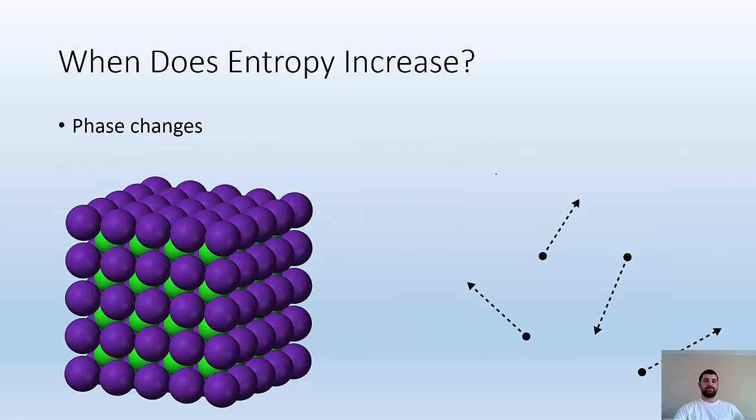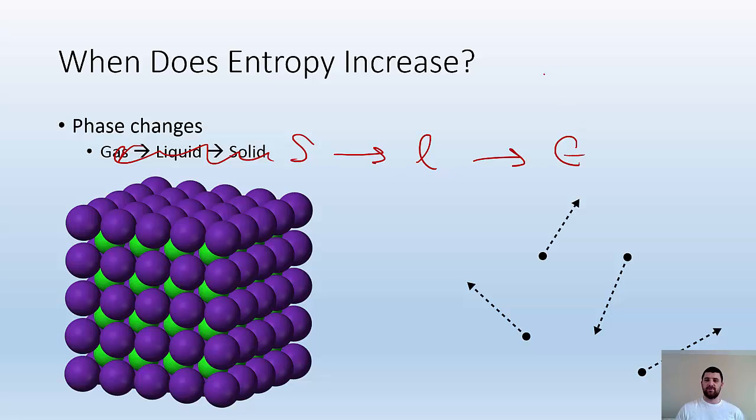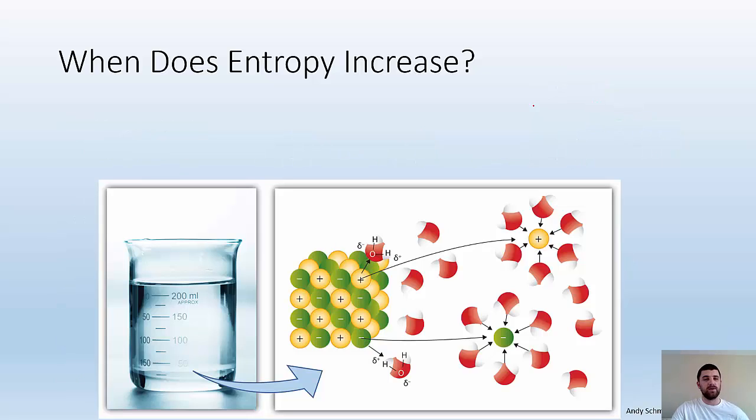So when does entropy increase? Well, it increases with phase changes. Going from a solid to a liquid to a gas is where you have more entropy. If we take a look at the solid particle diagram, everything's nice and organized, regular shape, packed neatly, whereas gas particles are moving all over in different directions. That's more chaotic.